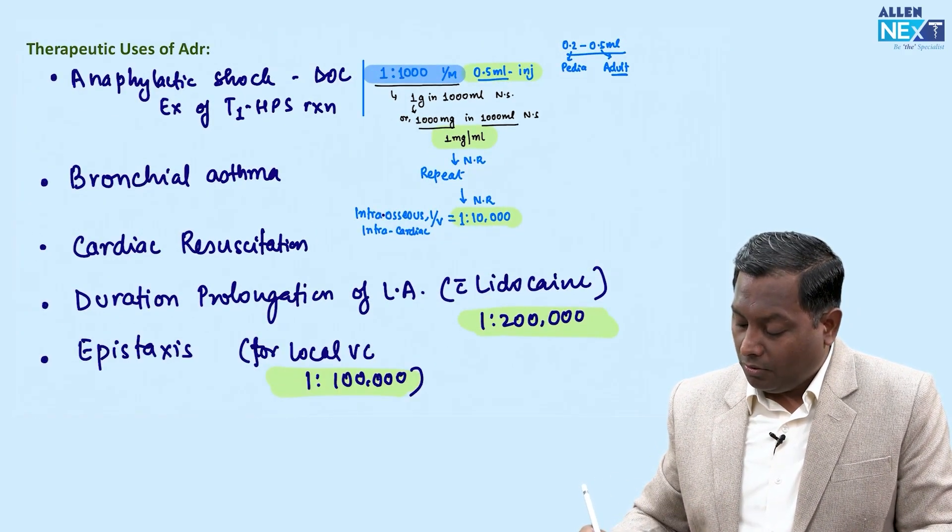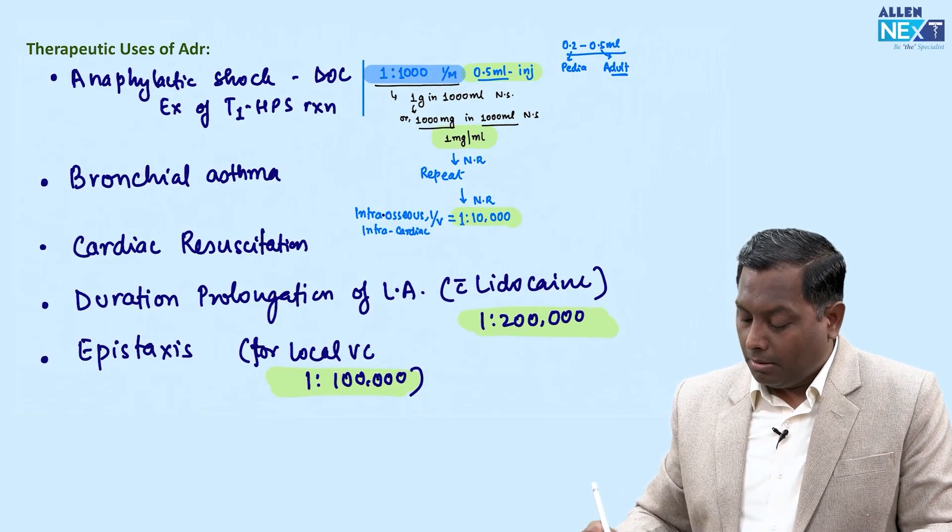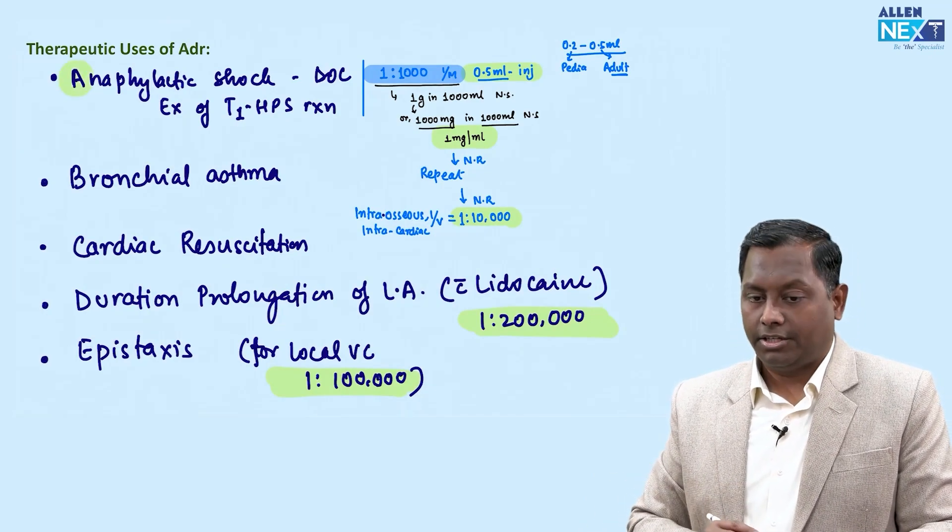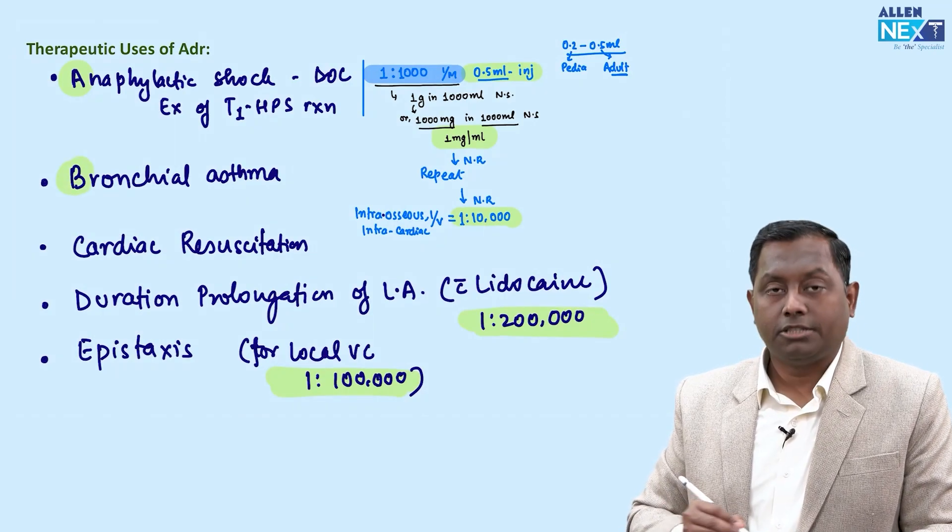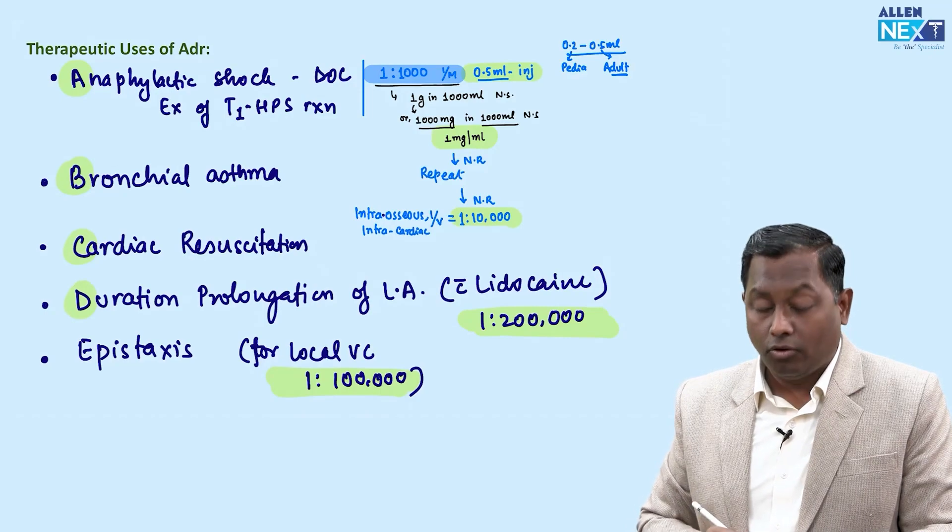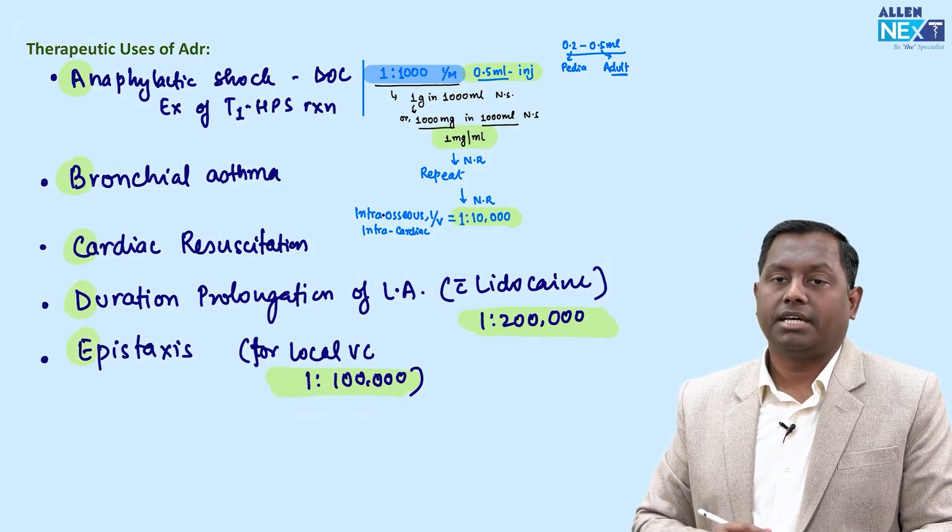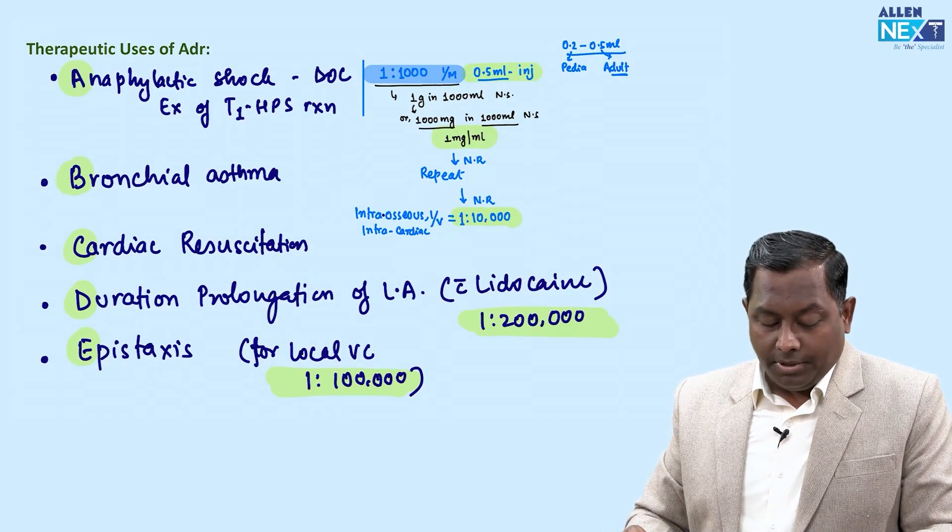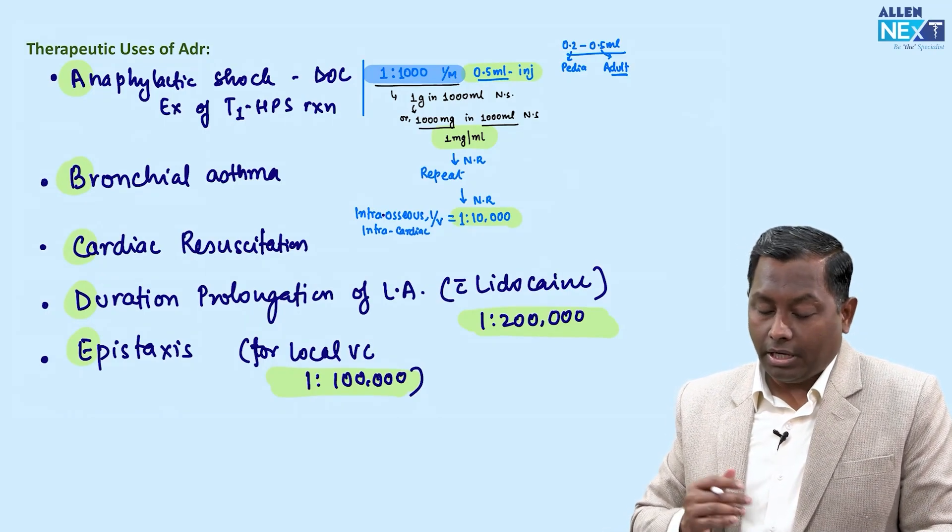You can remember all uses of epinephrine by a simple mnemonic ABCDE: A for anaphylactic shock, B for bronchial asthma, C for cardiac resuscitation, D for duration prolongation of local anesthetic, and E for epistaxis.